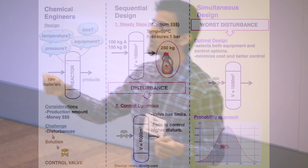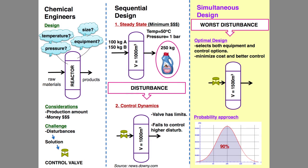Now, if the worst disturbance is not that frequent, we can use one of the other worst disturbances that happens more often, like the one that takes place 90% of the time. And we call that the probability approach.